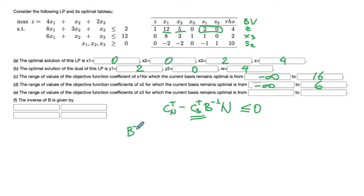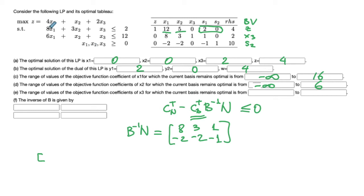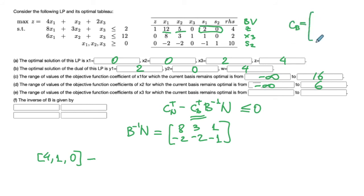B^{-1}N is formed by the columns for x1 (8, -2), x2 (3, -2), and s1 (1, -1). c_N^T is given by (4, 1, 0). It is important to remember that these parameters refer to the original problem data. The vector c_B corresponds to basic variables x3 and s2, with coefficients 2 and 0 respectively. Since we are changing x3's coefficient, c_B becomes (2 + delta, 0).